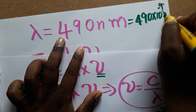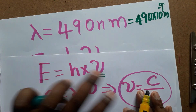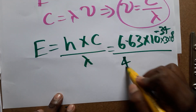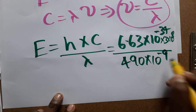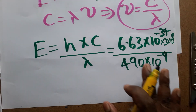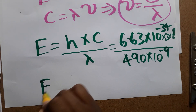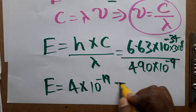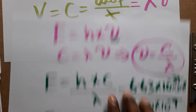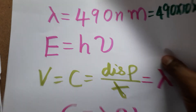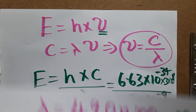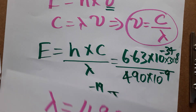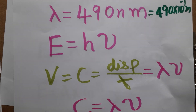We convert 490 nanometers to SI units: 490 × 10⁻⁹ meters. Putting everything in SI units allows us to get the answer in joules. After the full calculation, we get energy equal to 4 × 10⁻¹⁹ joules. So from wavelength, we calculated how much energy is produced — converting nanometers to joules. Thank you for watching, please subscribe.